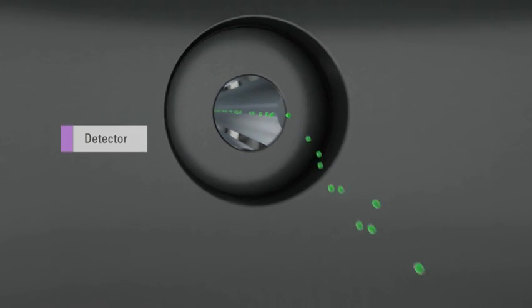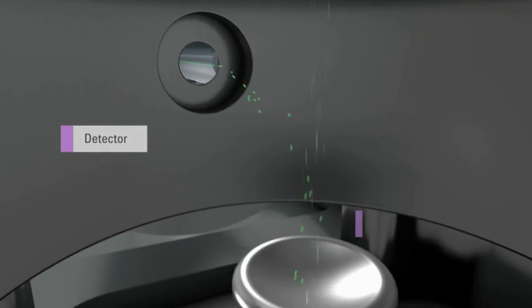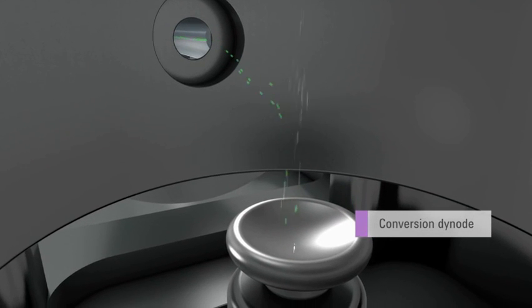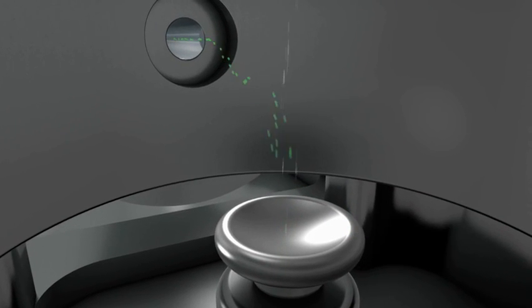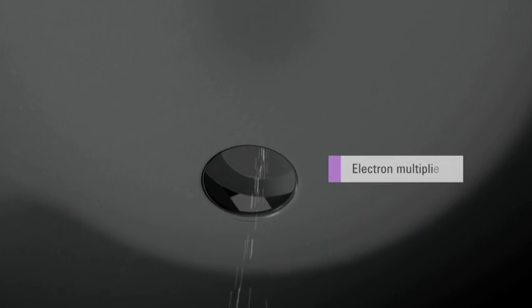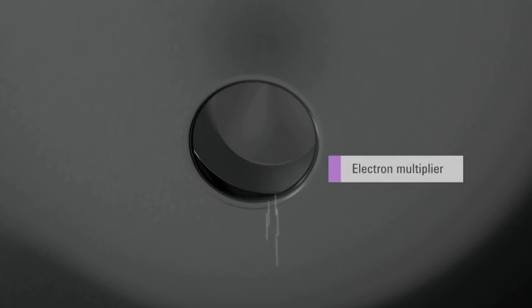Finally, the new detector features a high voltage conversion dynode that enables highly efficient positive and negative ion detection. This design improves signal conversion efficiency while maintaining very low noise.